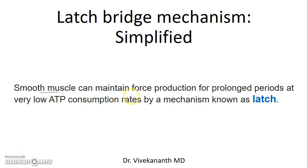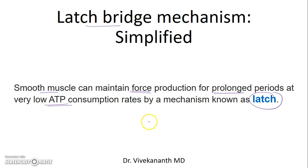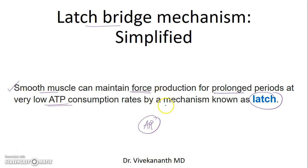Smooth muscles can maintain force production for prolonged periods at a very low ATP consumption rate. This mechanism is known as latch, also called the latch bridge mechanism. This does not exist in skeletal muscle. A skeletal muscle has to produce sustained force production for a long time and will use a lot of ATP, but smooth muscle can do it very economically. This video is a simplified view of how this works, and I will try to provide a simplified view of the latch bridge mechanism.